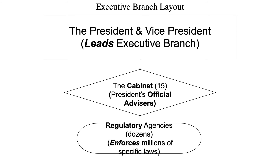Looking at the hierarchy or chain of command for the executive branch: the president serves the highest position, elected by the population of the United States. The vice president serves as a support figure and steps in if the president becomes ill, incapacitated, or unable to perform their duties. Underneath these two critical positions, we have the cabinet, formally composed of about 15 departments. These departments are full of advisors and support staff who help guide the president or vice president. Beneath the cabinet are other critical regulatory agencies, commissions, and positions that help oversee the enforcement of laws and protection of the United States and its people.